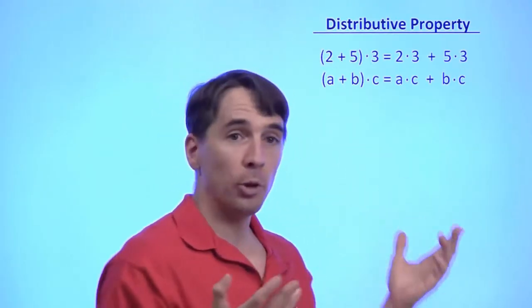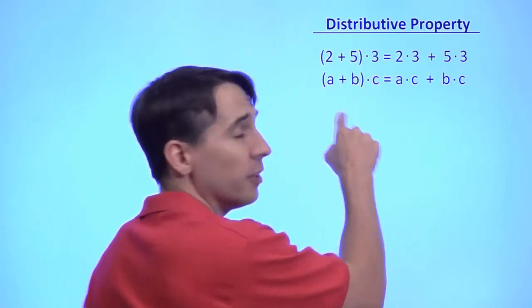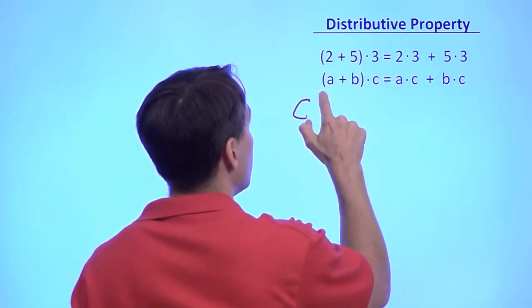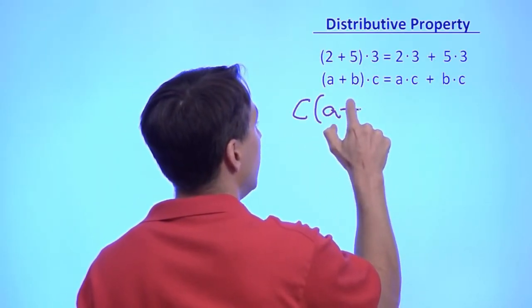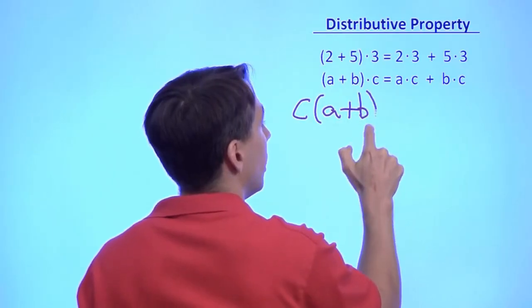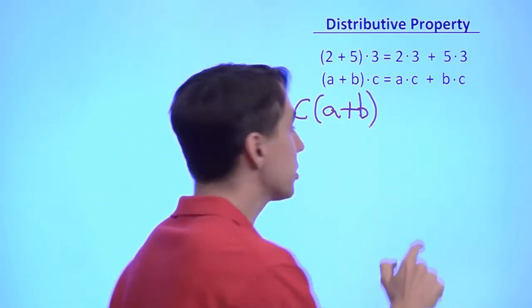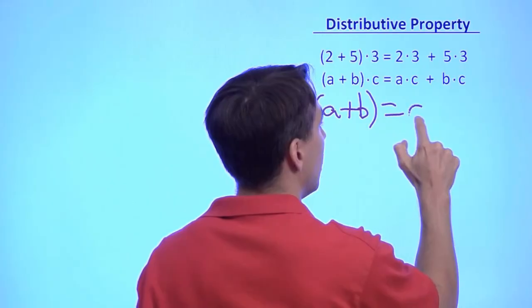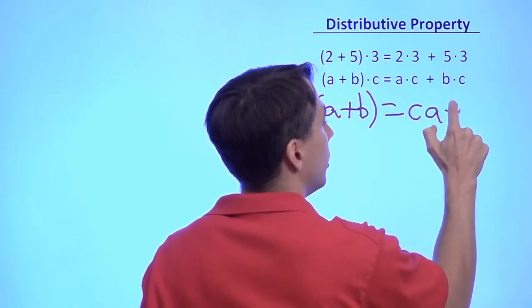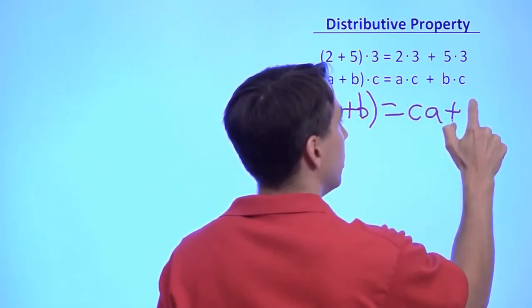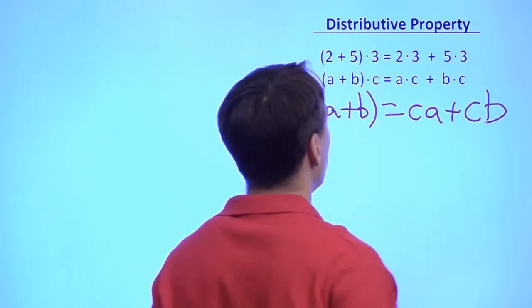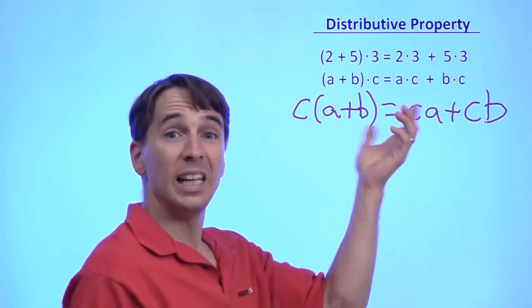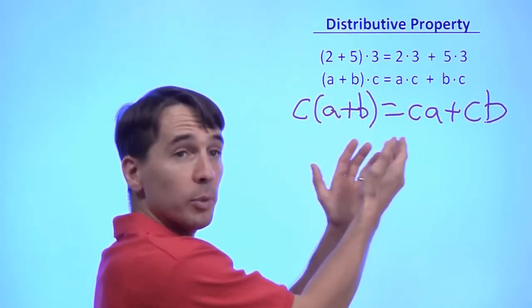Now, of course, with multiplication, if you're multiplying two numbers, it doesn't matter what order you multiply the two numbers. So I can reverse this product and write it as c times (a + b). And reverse each of these two products. So this is c times a, and this is c times b. So I can write the distributive property either way. I can put the sum second, or I can put the sum first.